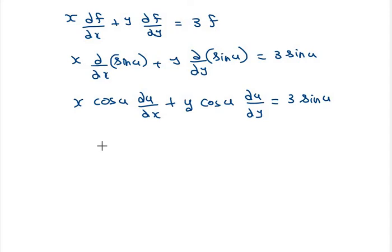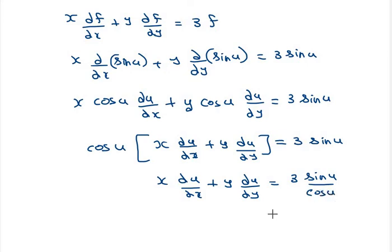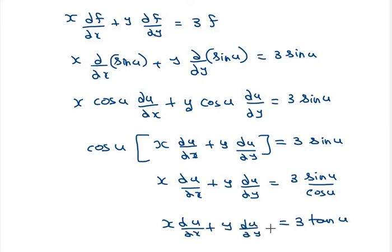Taking cos u common, we have: cos u times (x ∂u/∂x plus y ∂u/∂y) equals 3 sin u. Therefore, x ∂u/∂x plus y ∂u/∂y equals 3 sin u divided by cos u, which is 3 tan u. That is the final answer.